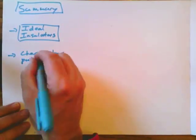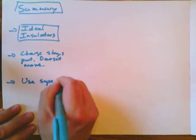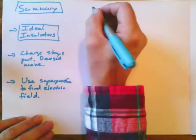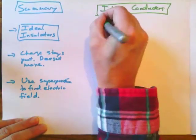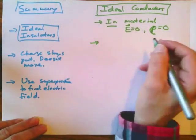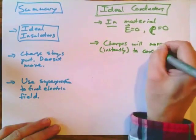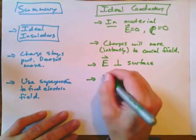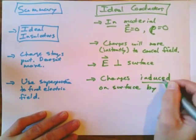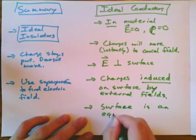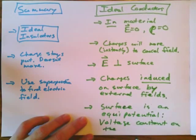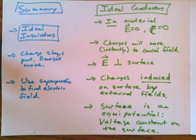In summary: for an ideal insulator, the charge stays put and doesn't move — you use superposition to find the electric fields, and the insulator doesn't by itself deflect or change them. In contrast, for an ideal conductor, the electric field and charge density inside are zero; charges move instantaneously to cancel any field. The electric field is perpendicular to the surface, charges are induced on the surface by external fields, and the surface is an equipotential — the voltage is constant on the surface. We call it an insulator because no current can flow since the charges stay put, while in a conductor, charges can flow and current can be conducted.